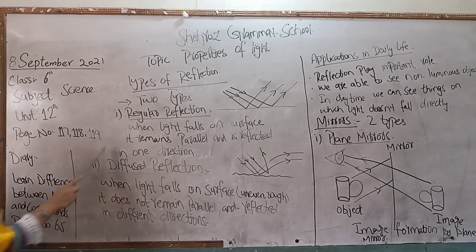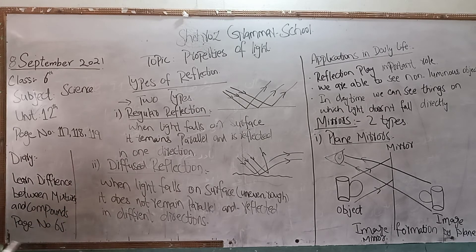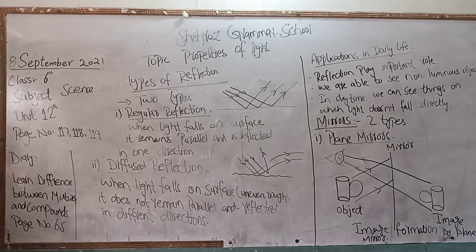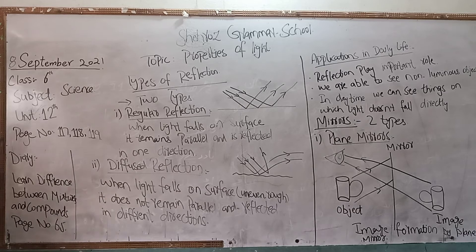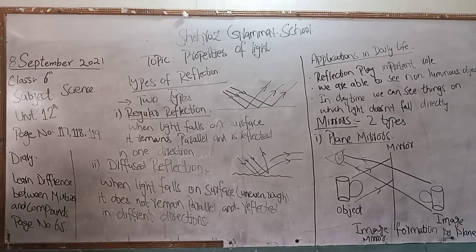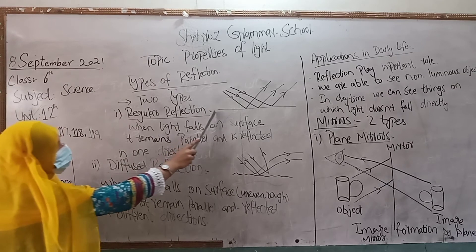There are two types of reflection. The first one is regular reflection and the second one is diffuse reflection. Regular reflection occurs when you have a smooth or shiny surface, like glass or polished metal, where light reflects in a parallel direction.